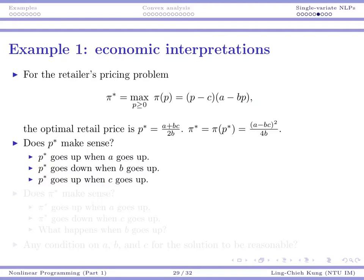For c, it's another side, it's the cost side. When the procurement cost becomes higher, naturally, you need to, you are forced to charge a higher price. So these three things all together somehow verify our solution and somehow provide some intuition to us, some interpretations to us.